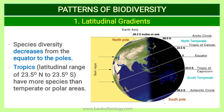We have patterns of biodiversity, the first of which is the latitudinal gradient in species diversity. Species diversity decreases from the equator to the poles, meaning species richness decreases as we move from the center outward. The tropical latitudinal range of 23.5 degrees north to 23.5 degrees south has more species than temperate or polar areas.